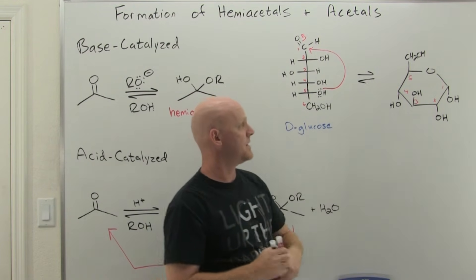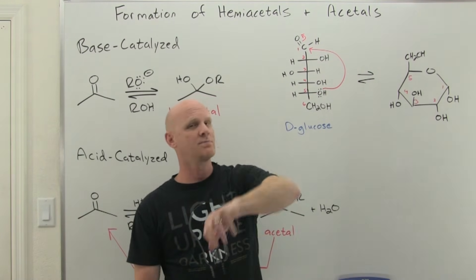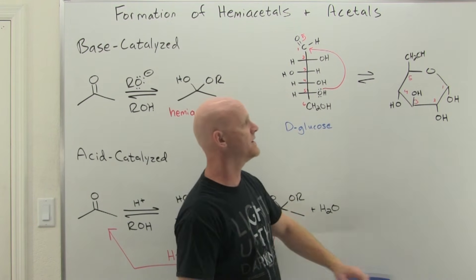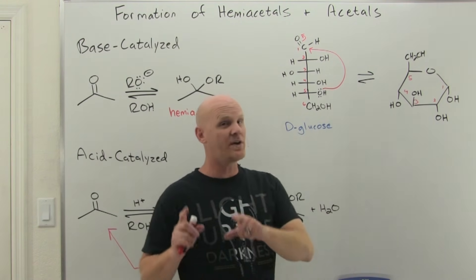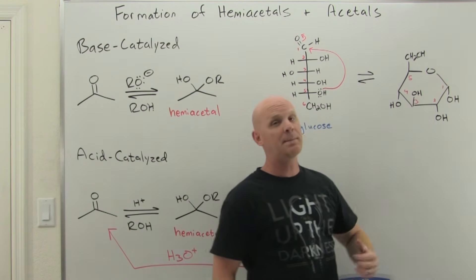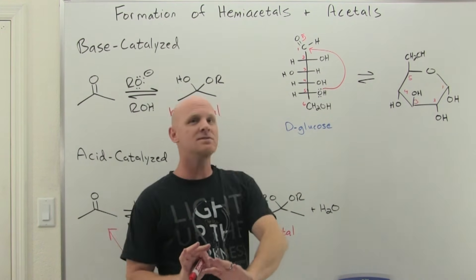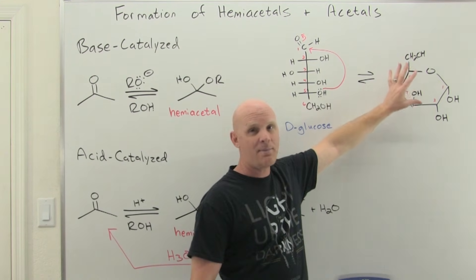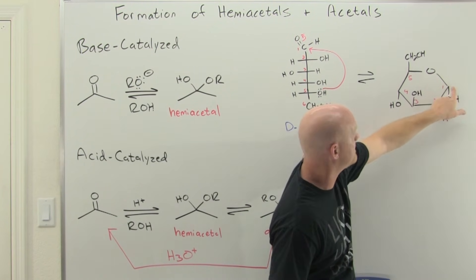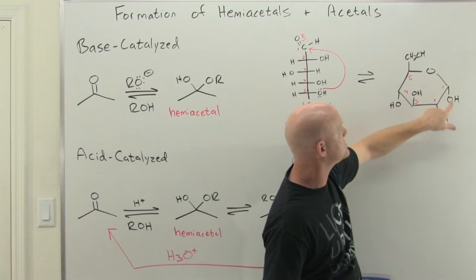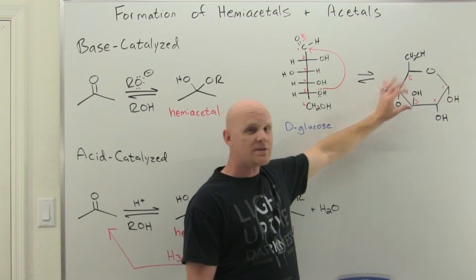Because carbon 1 can form two different chiral configurations, we call it the anomeric carbon. For a D-sugar, when the OH at the anomeric carbon points down, we call it alpha; when it points up, we call it beta. This will be important in biochemistry. To confirm this is a hemiacetal: the anomeric carbon is bonded to two oxygens — one is an OH and one is an OR (the ring oxygen) — which fits the definition of a hemiacetal perfectly.